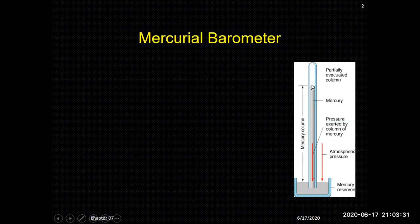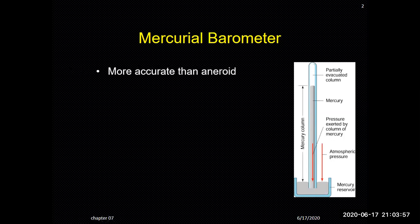The tube is closed from the upper side while the front side is open. The outer atmospheric pressure exerted on the surface of the mercury compels the mercury to rise up inside the tube. The height of the mercury level is then marked and divided into graduated marks so that the pressure can be measured accurately.